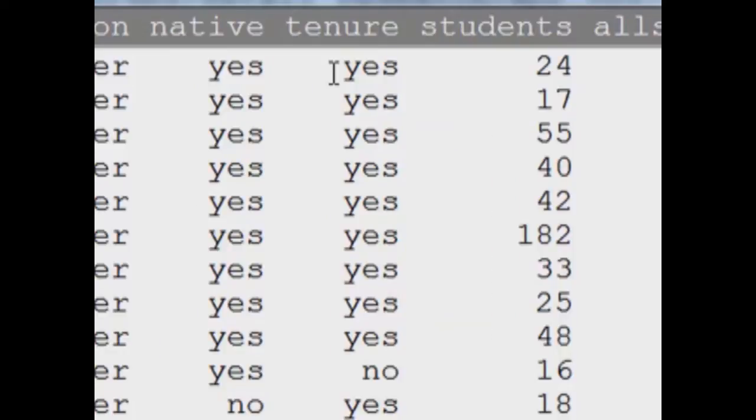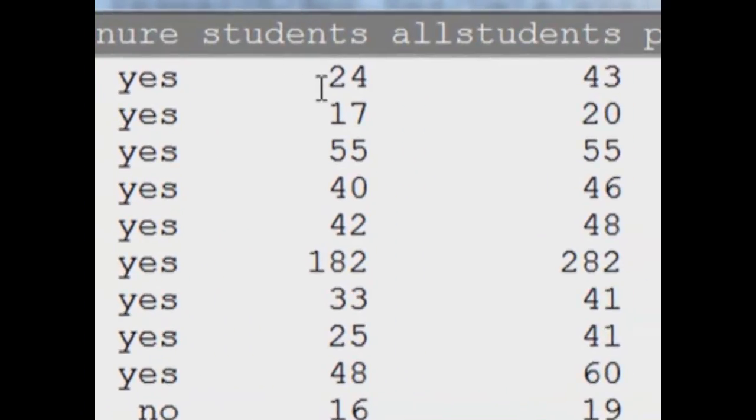Tenure is another variable. If a professor is tenured, then this variable is yes. If he or she is not tenured, then no. You notice that minority and tenure are both yes and no type of factor variables that can take either/or type of values, and these are called categorical variables as well.